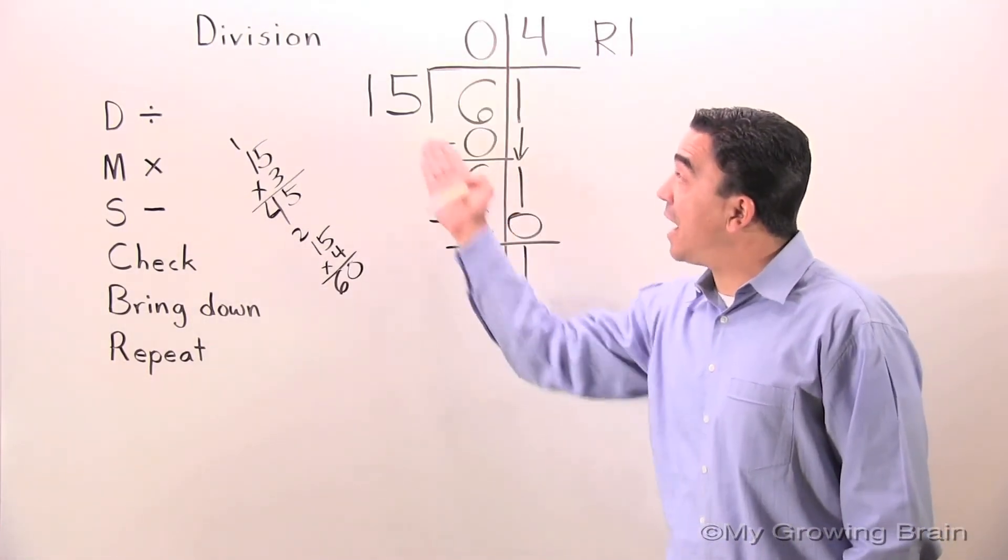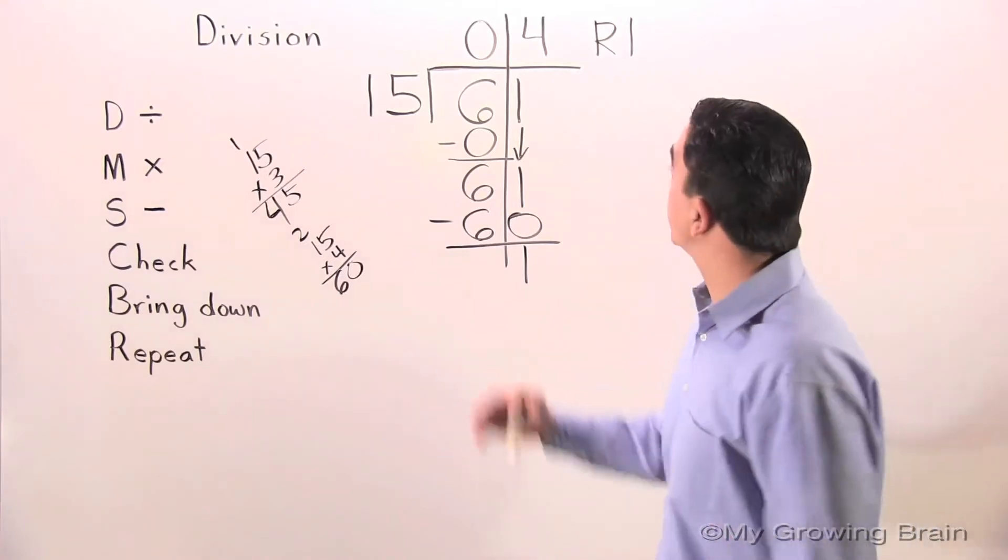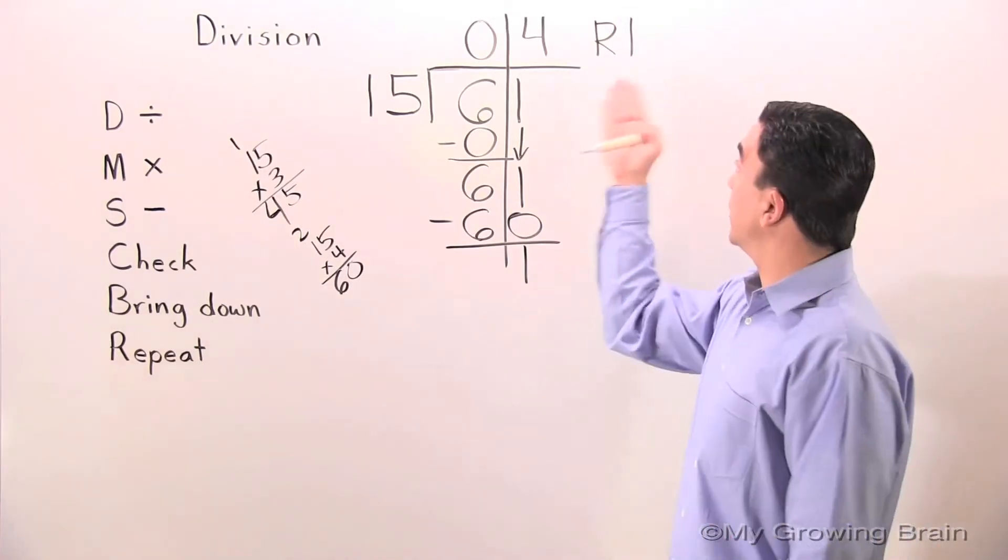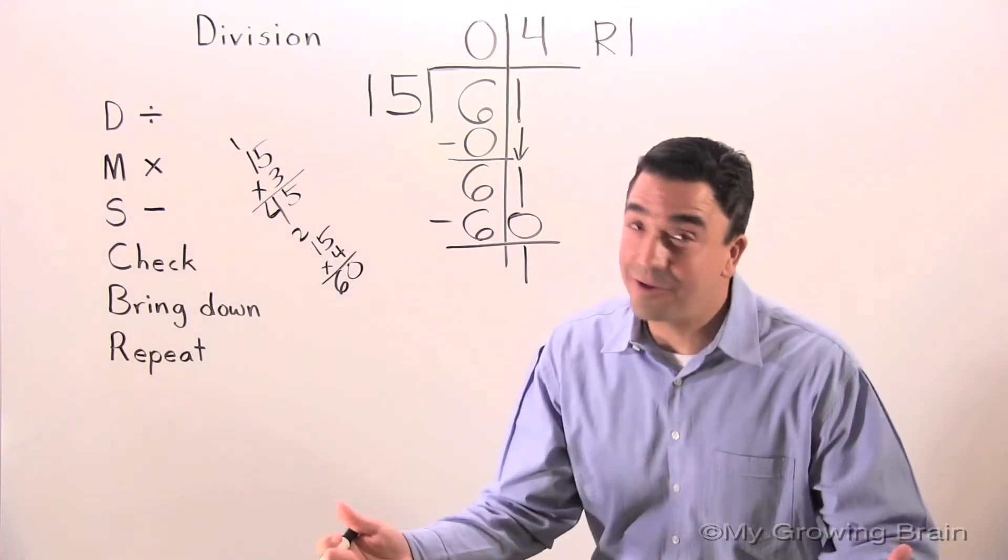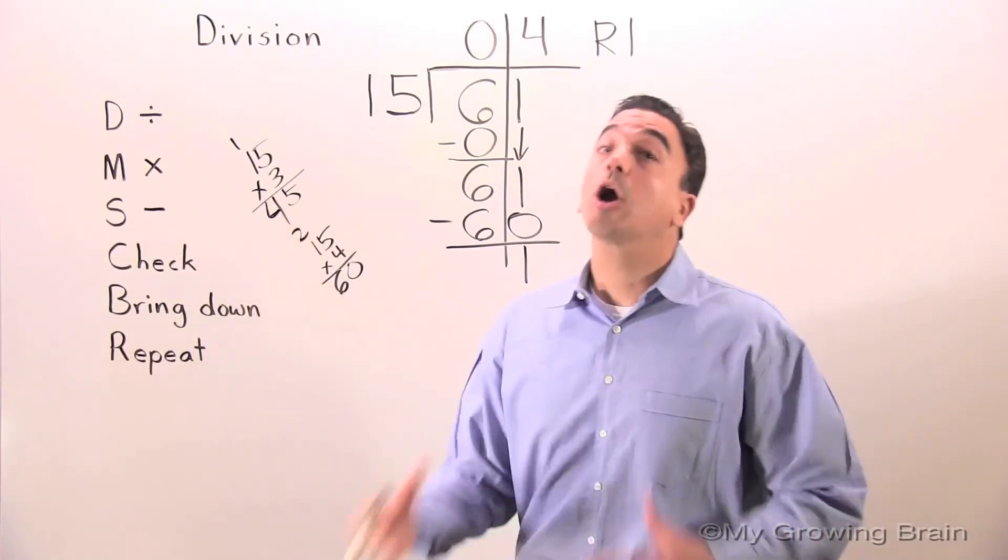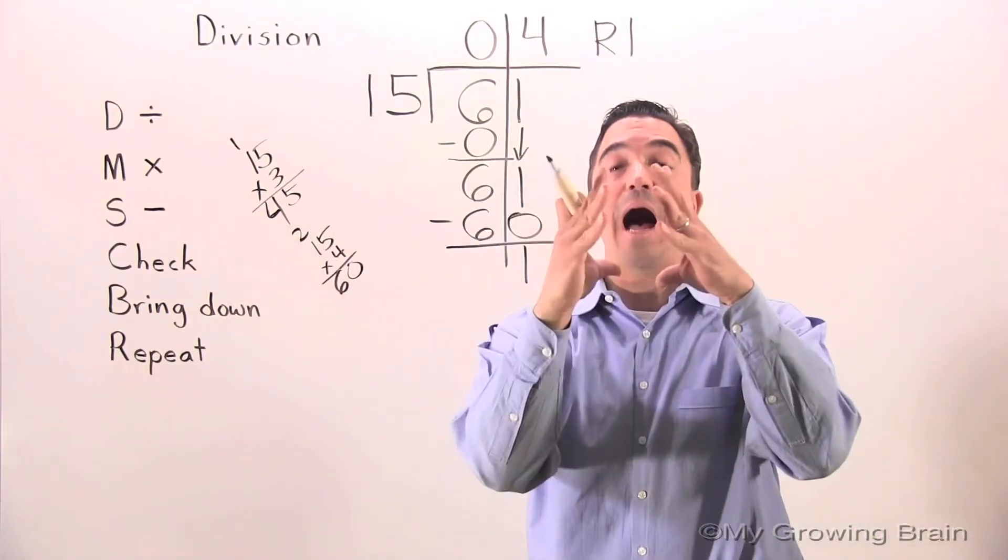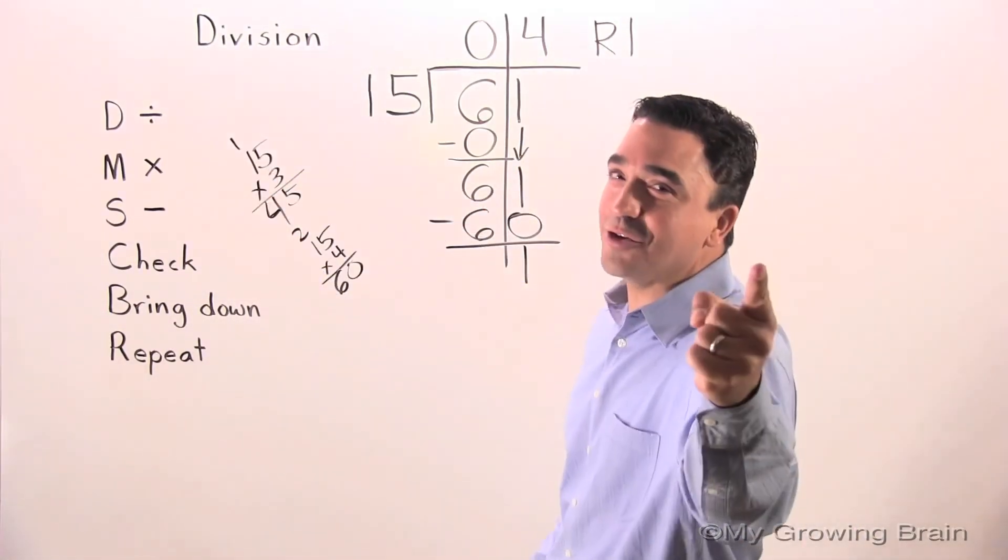61 divided by 15 gives us a quotient of 4, remainder 1. That concludes our lesson on division. Coach Mike at My Growing Brain. Challenge yourself.